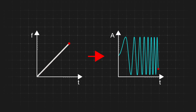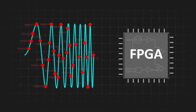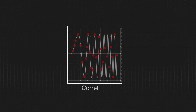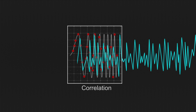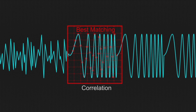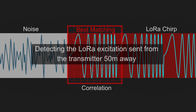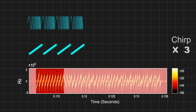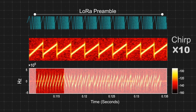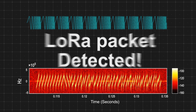To achieve this with a minimum power budget, we reduce the sampling rate of the ADC and perform cross-correlation between incoming signals and the pre-stored preambles in the FPGA. The detection of 10 consecutive upchirps indicates the existence of a LoRa preamble.